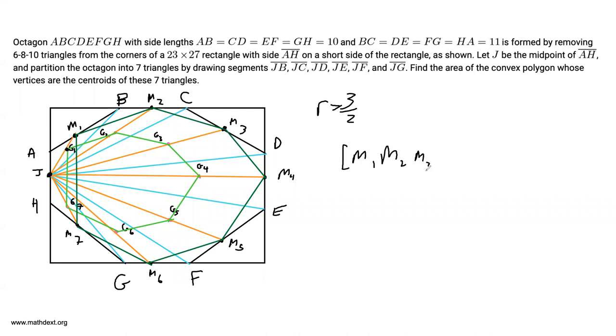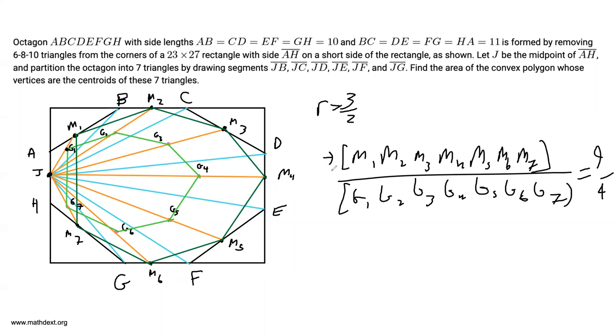So M1, M2, M3, M4, M5, M6, M7 over the area G1, G2, G3, G4, G5, G6, G7 is equal to 9 over 4. What this means is we simply have to find the area of the polygon that is composed of all seven of these midpoints. And that over this is equal to 9 over 4. So let's go ahead and find the area of the heptagon formed by the midpoints.